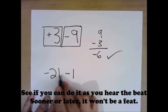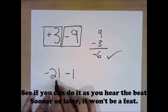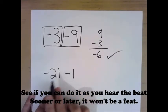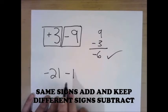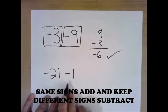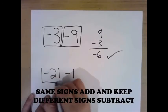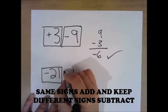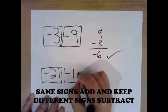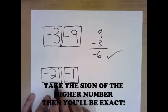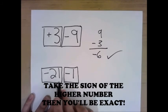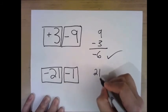See if you can do it as you hear the beat. Sooner or later, it won't be a beat. Same signs add and keep, different signs subtract. Take the sign of the higher number, then you'll be exact.